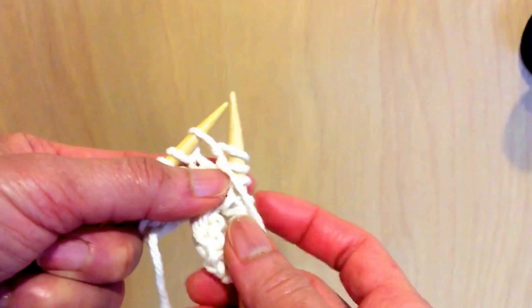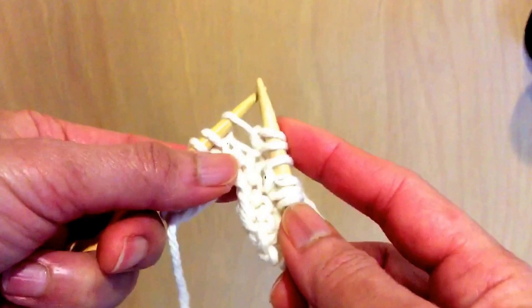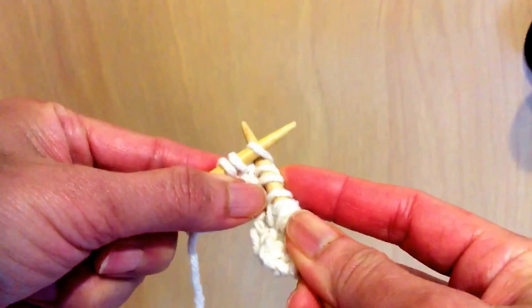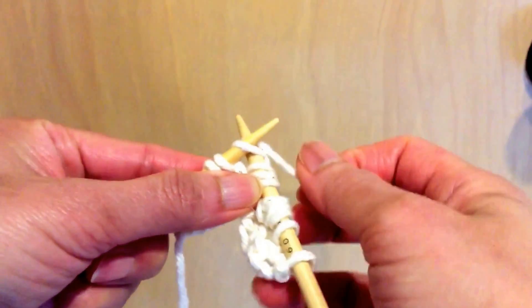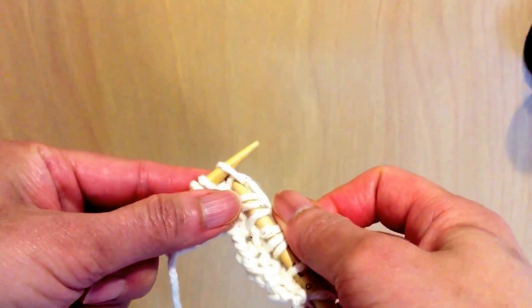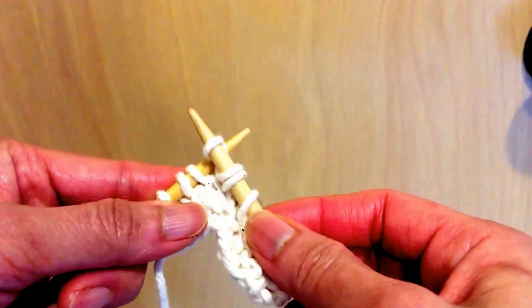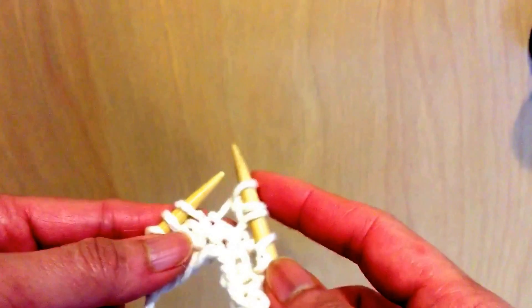We got K1 to go. So bring the yarn to the back. And then we're going to knit that once more. Still working on the same stitch. Knit. Okay. So this is our final one. We're going to slip that right off the stitch.